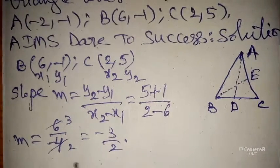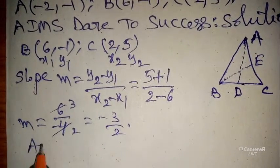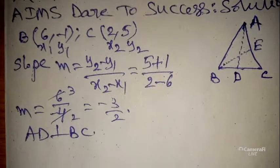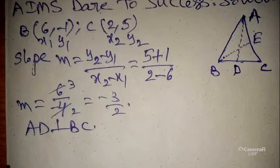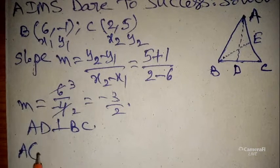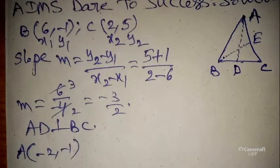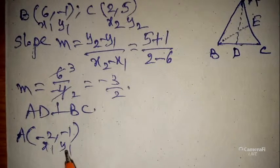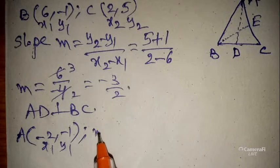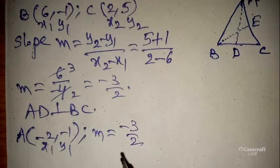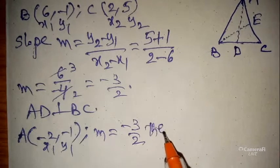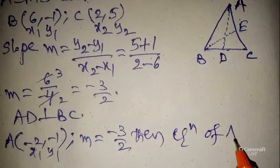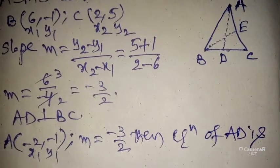AD is perpendicular to BC. To get the equation of AD, we need point A. From the given question, A is (−2, −1), so let x1 = −2, y1 = −1, and the slope m = −3/2.